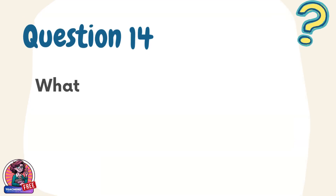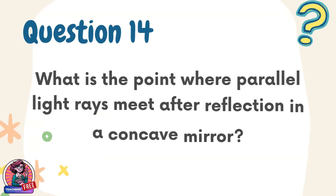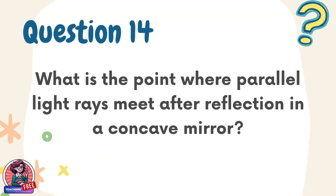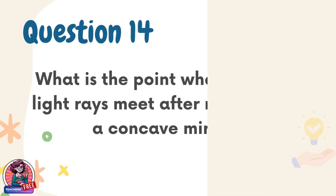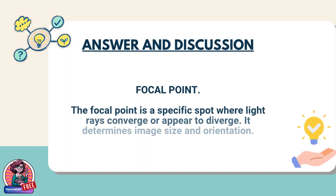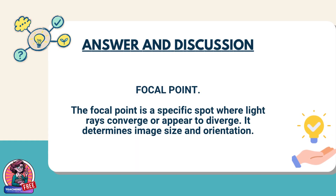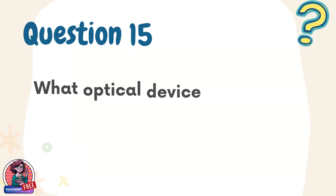Question 14. What is the point where parallel light rays meet after reflection in a concave mirror? Answer: focal point. The focal point is a specific spot where light rays converge or appear to diverge. It determines image size and orientation.